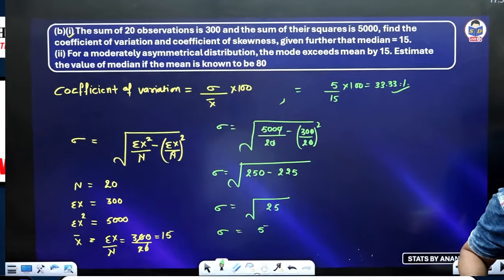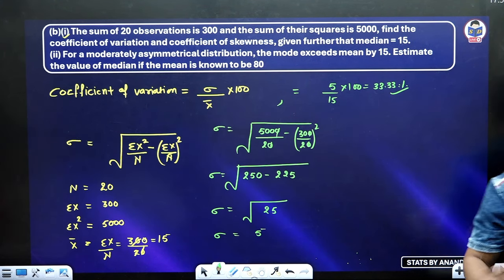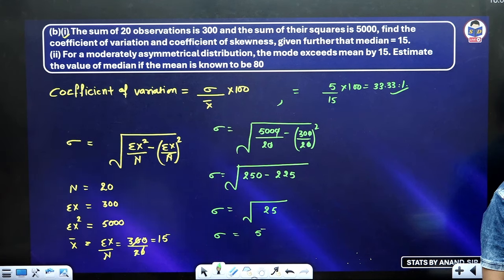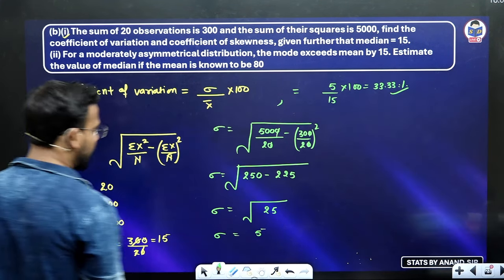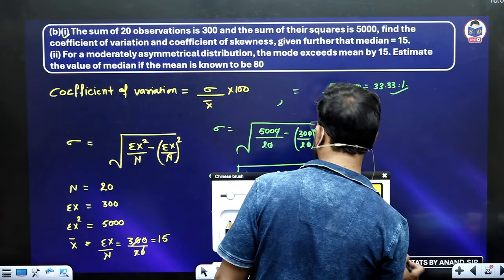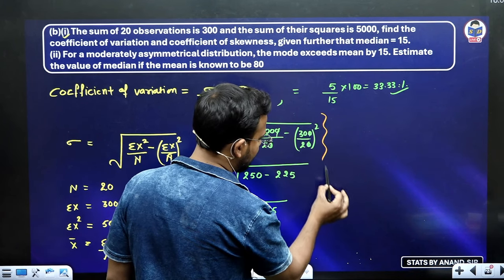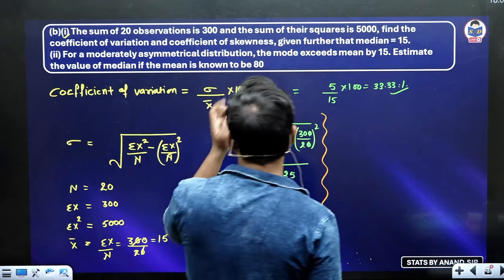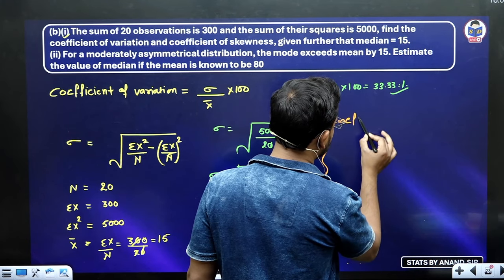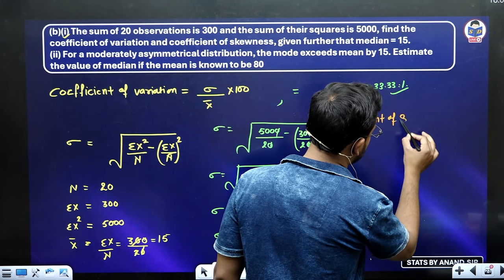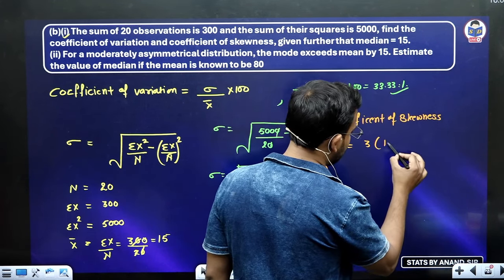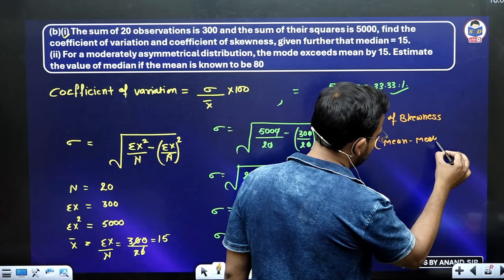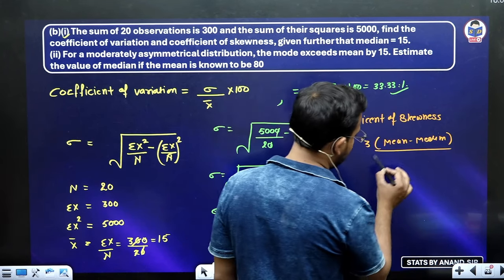The topic of coefficient of variance is covered in detail in the present chapter. We are now trying the previous question. Now what are you asked? Coefficient of skewness. The formula of coefficient of skewness is: 3(mean minus median) upon standard deviation.